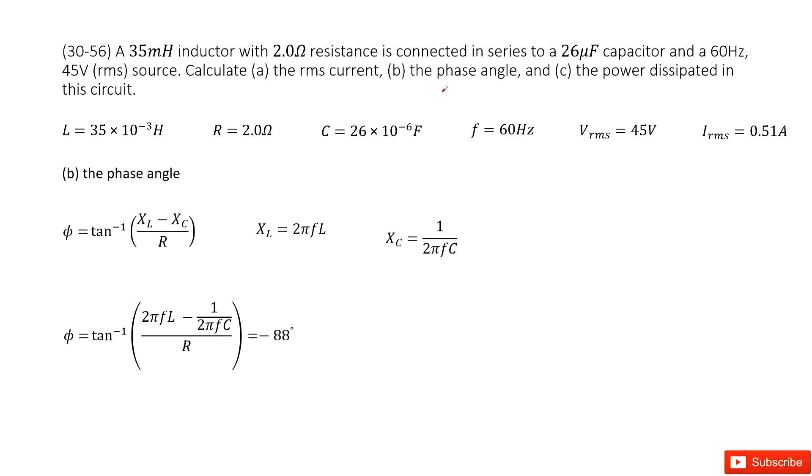The second part is find the phase angle. As we can get from the textbook, the definition for phase angle is we get the arctangent. Use the phase shift, the inductance minus capacitance, divided by resistance R.